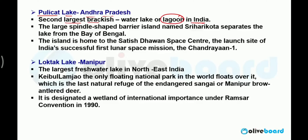Pulikat Lake is in Andhra Pradesh and is the second largest brackish water lagoon or coastal lake in India. A lagoon is a lake covered by land on most sides but connected to the sea on one side. Importantly, Satish Dhawan Space Center — from which Chandrayaan-1, India's first successful lunar mission, was launched — is situated on Pulikat Lake.